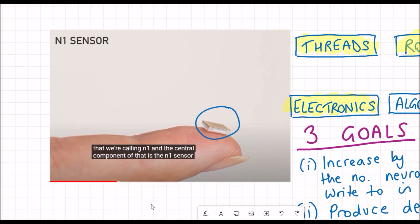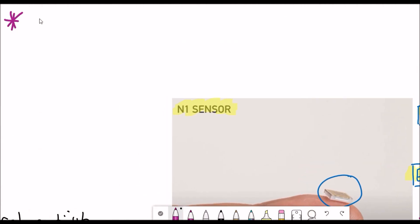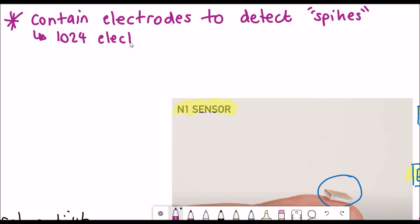If we look at the first goal first, the implantable device must be able to record the electrical signals and they can do that by using electrodes and these are what are used to detect the spikes. There are around 1024 electrodes on these devices.